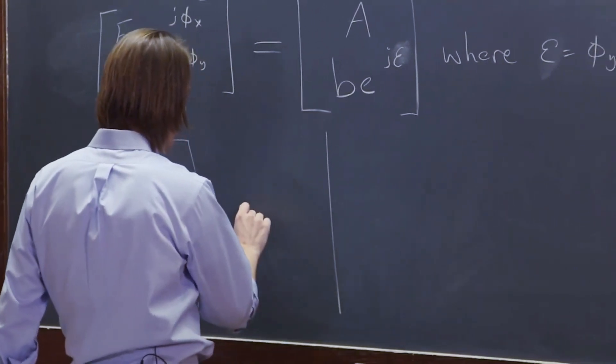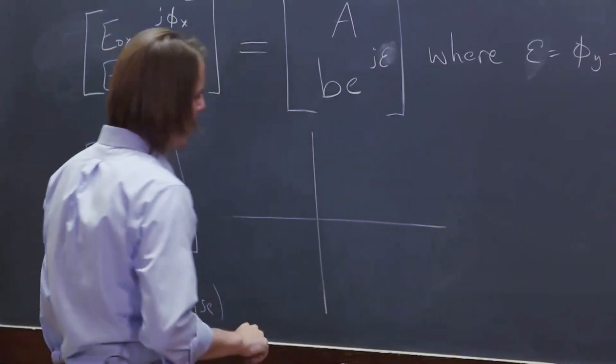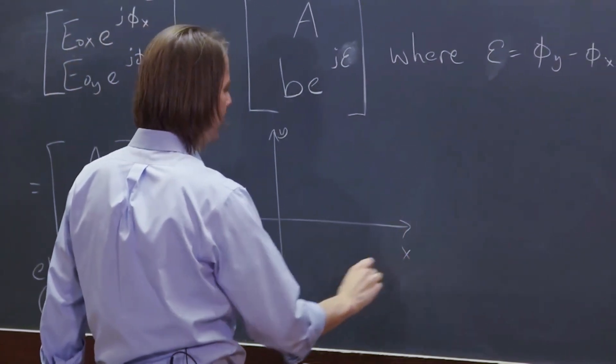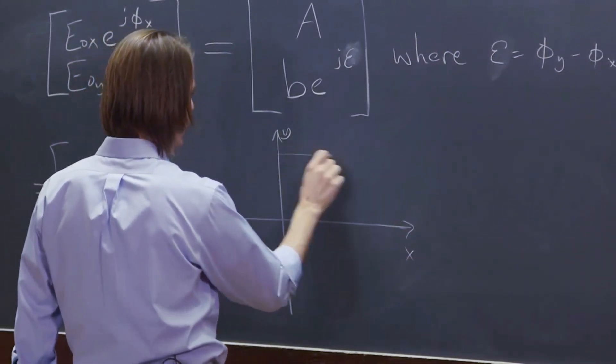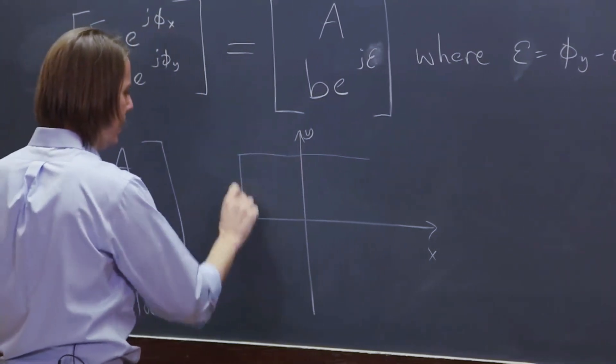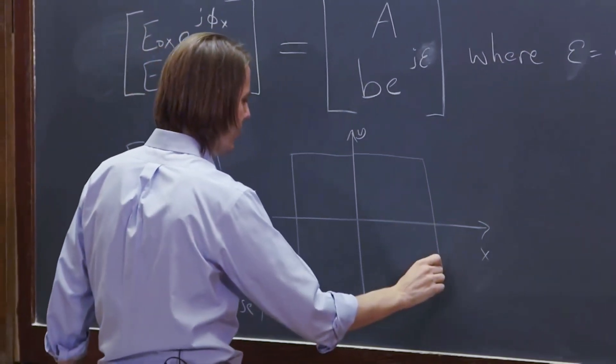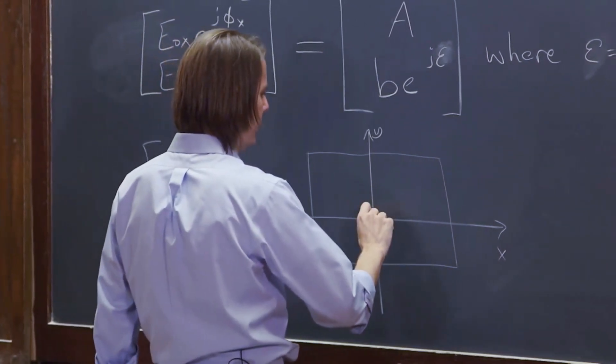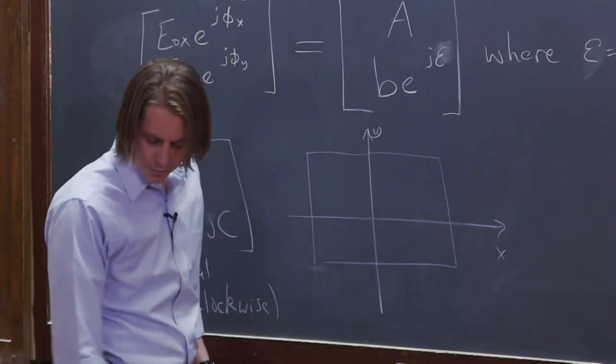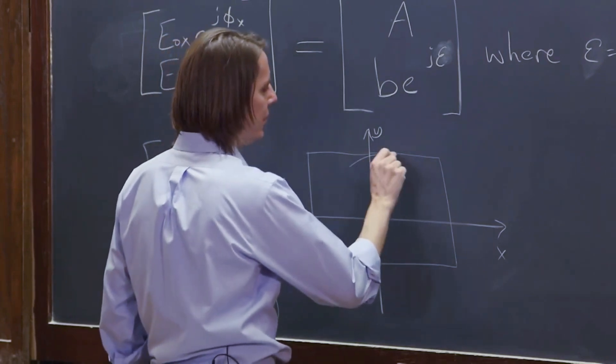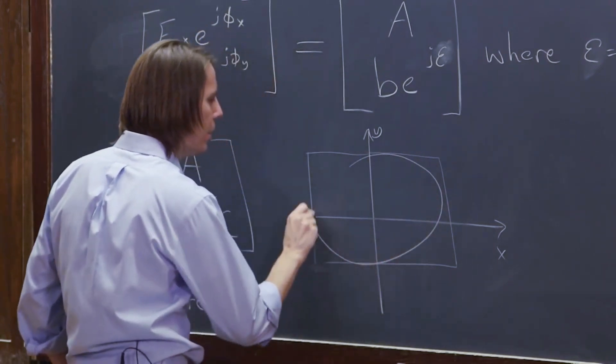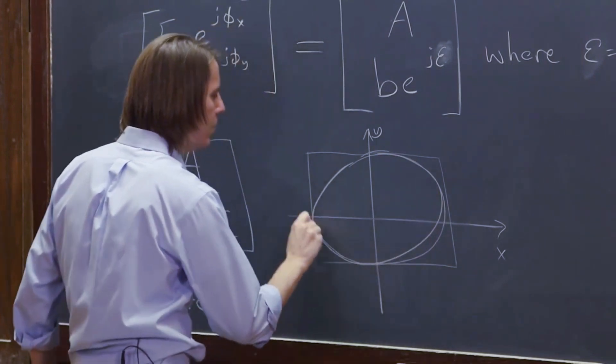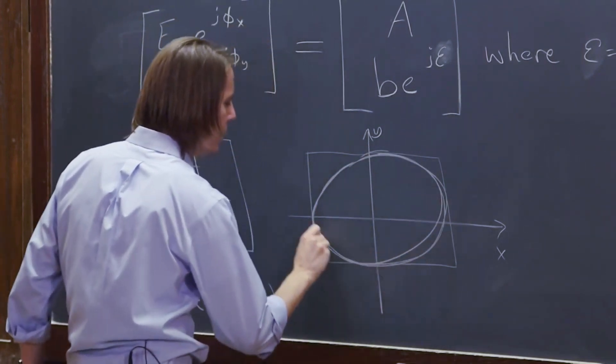So general elliptical light might look something like this. And I'm going to draw a box first that goes kind of like that. It doesn't do this, this is just a box to aid the drawing. And it will do something like, oh that was really good, something like this, like that.